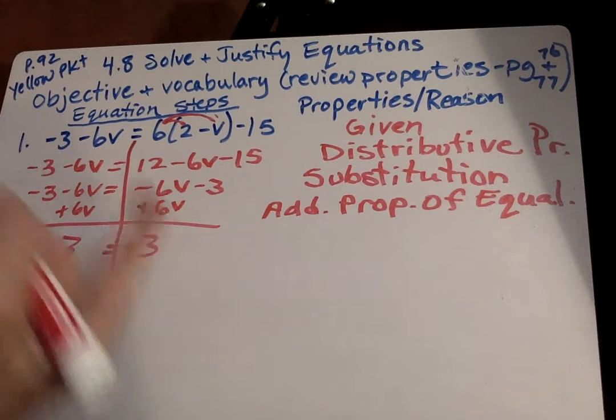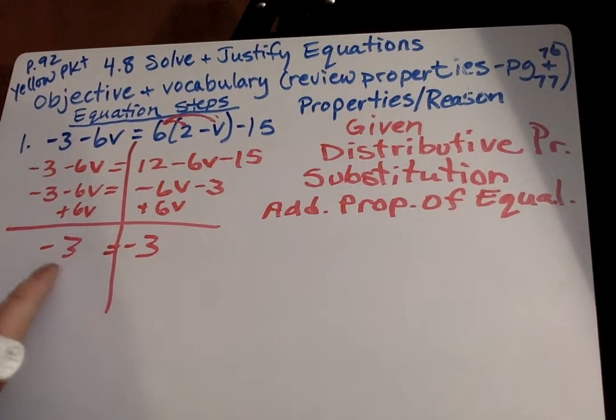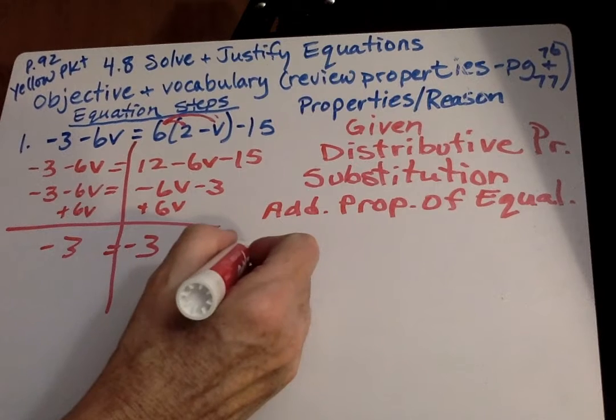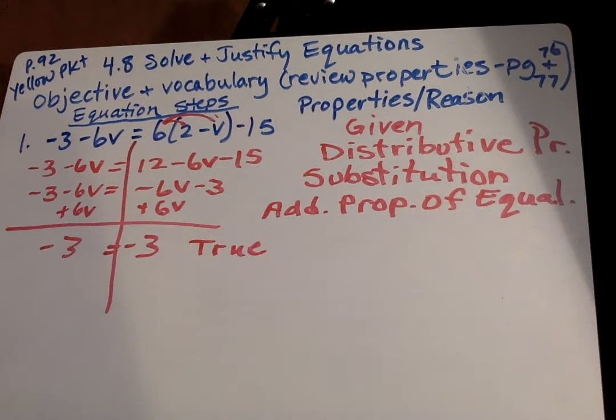Now, when the variable goes away, we look at what's left and we say, is this a true or a false statement? This is true. And if it is true, we say that the solution is infinitely many solutions.